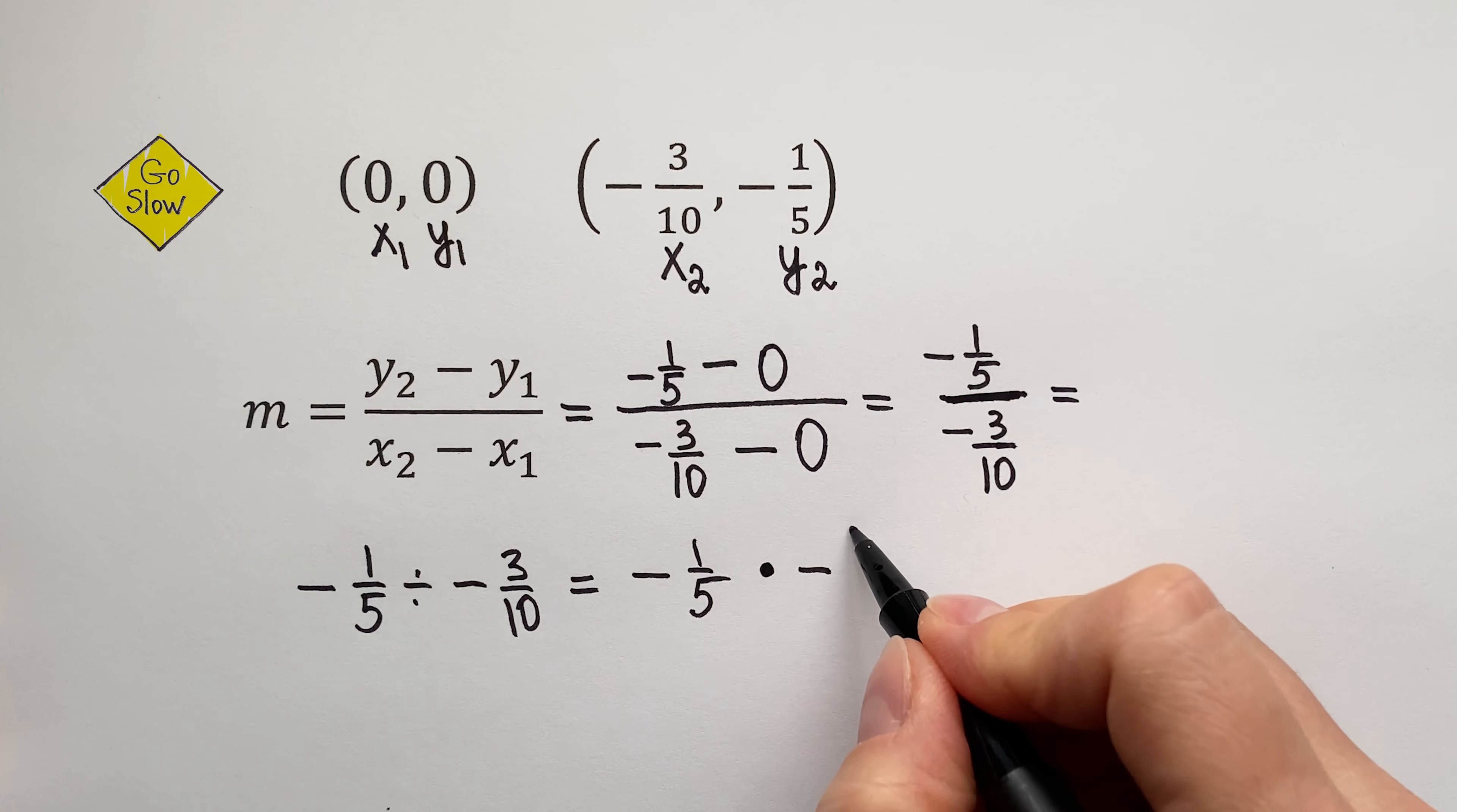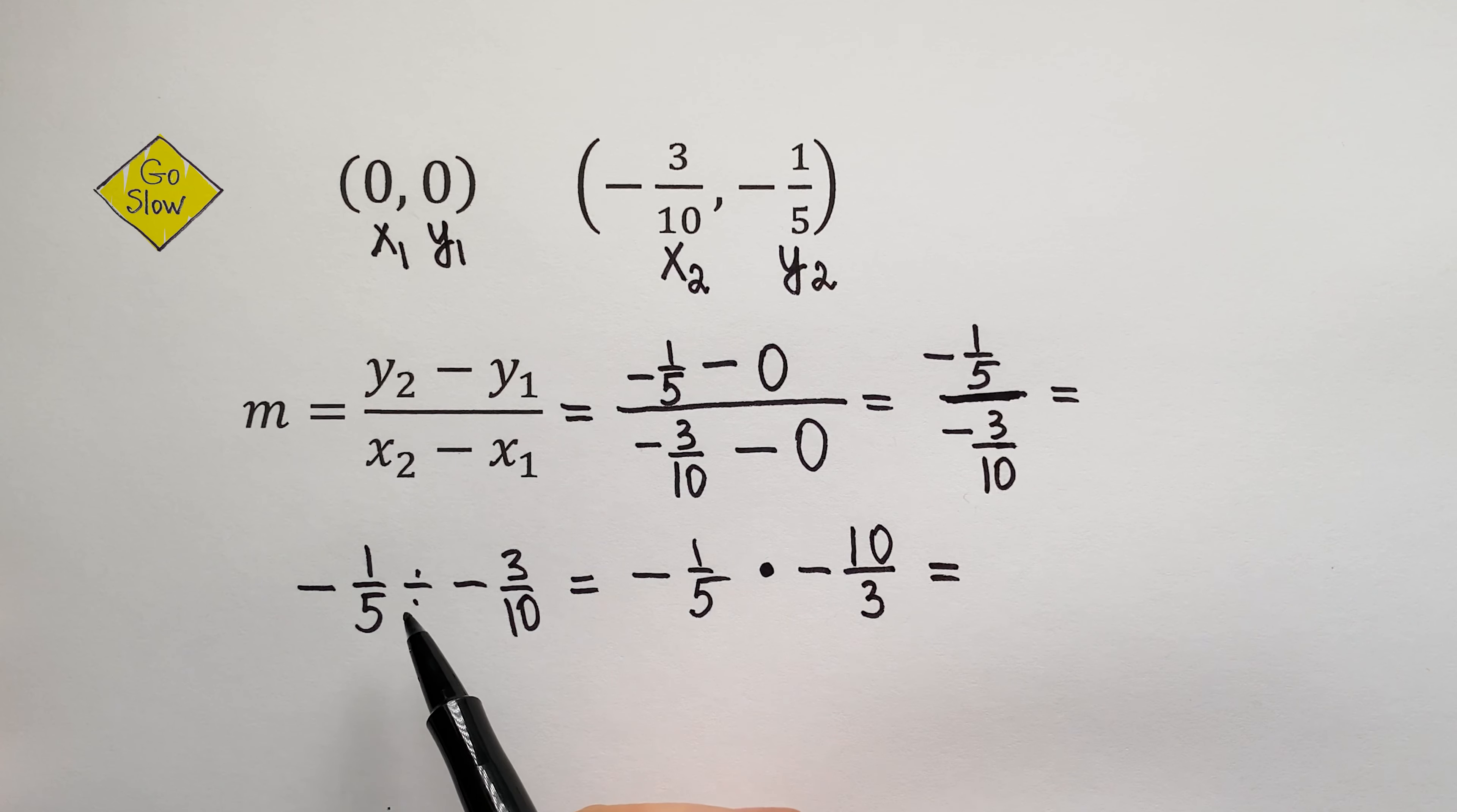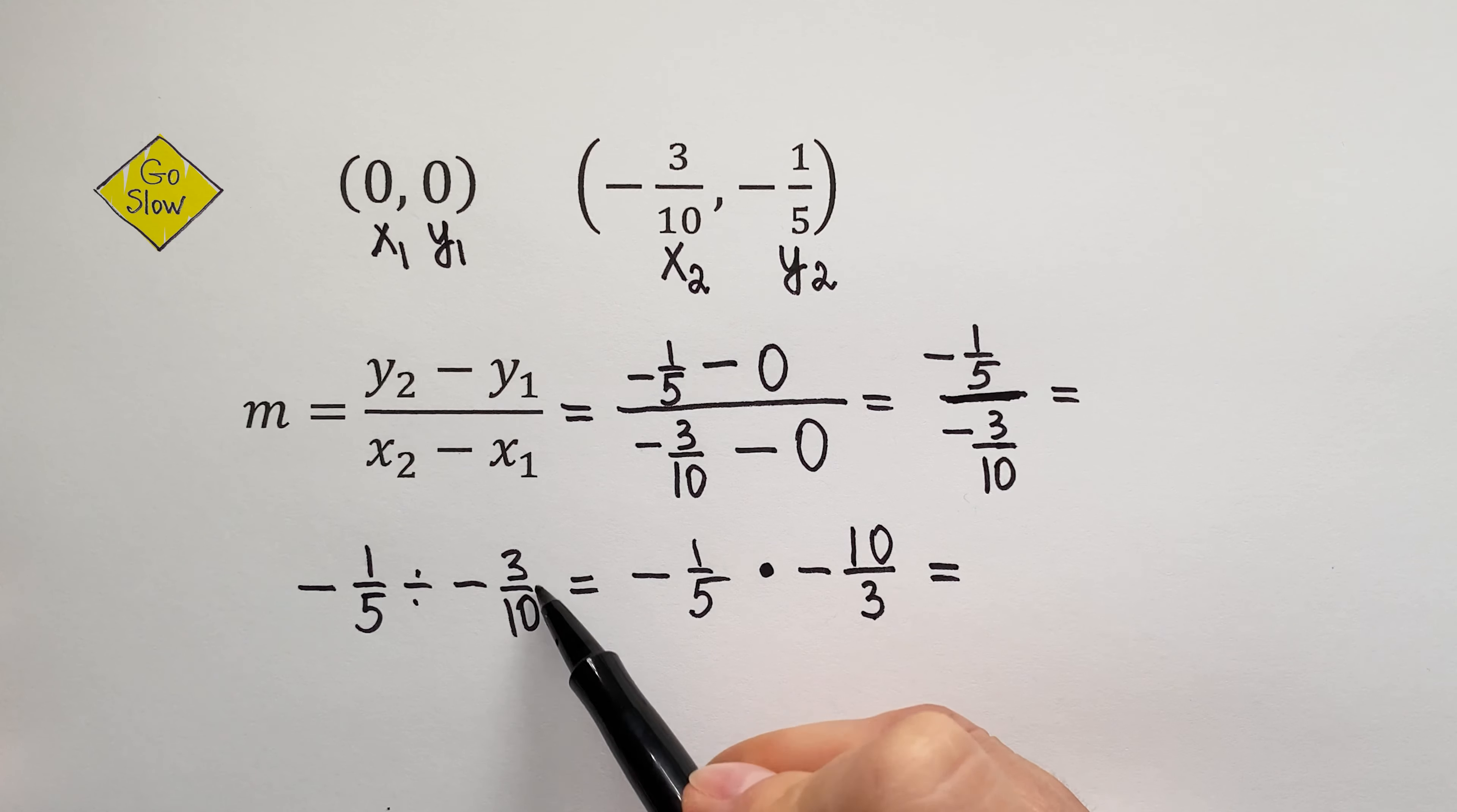Flip over the second fraction, 10 over 3. So, when you divide fractions, you multiply the first fraction by the reciprocal of the second fraction. To get the reciprocal, you flip over the second fraction. All right,